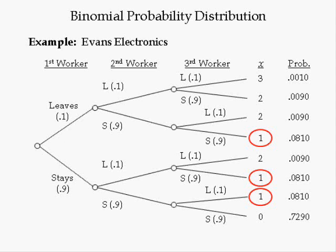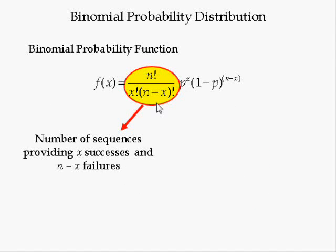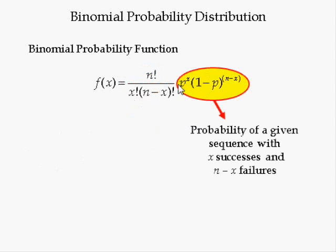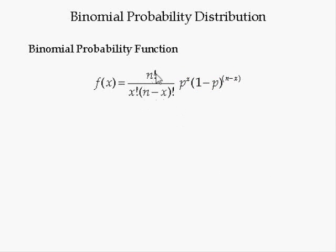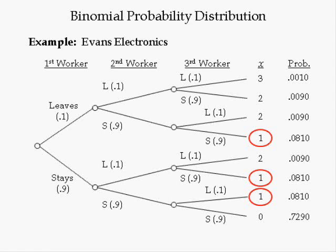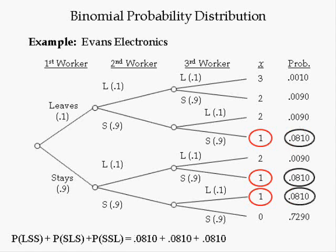Since there are three sequences of one success and two failures, and each of these sequences has the same probability of occurring — 0.0810 — the value in the red oval would be equal to 3. All that the binomial distribution function does is take the number of sequences (in this case three) and multiply by the probability of each sequence, which are identical. Adding up these probabilities yields 0.243. This is the exact same number we'd get using the binomial probability distribution function with X equal to 1, N equal to 3, and P equal to 0.1.